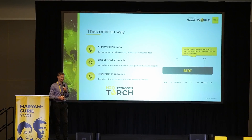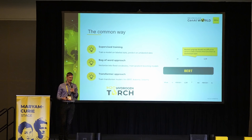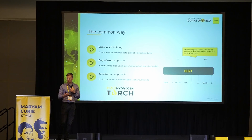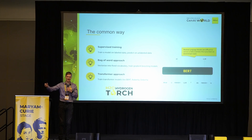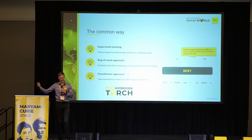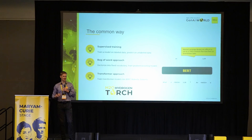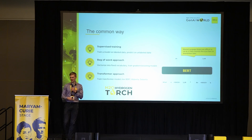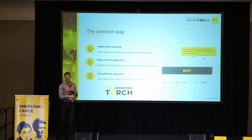The common way we have solved this over the last couple of years was via supervised training. You have labeled data, train a model on it, and predict on unlabeled data. Ten years ago, we were doing bag-of-words approaches — building tabular data out of text corpora, building a large vocabulary, counting word occurrences, and putting a tabular model on top. Nowadays we would use a gradient boosted model, which works decently well, but has been replaced over the last couple of years with transformer models.